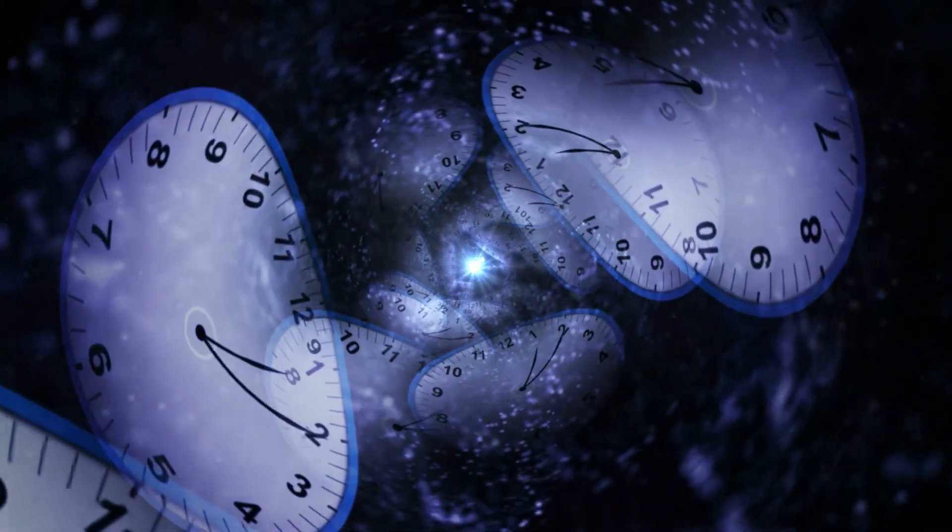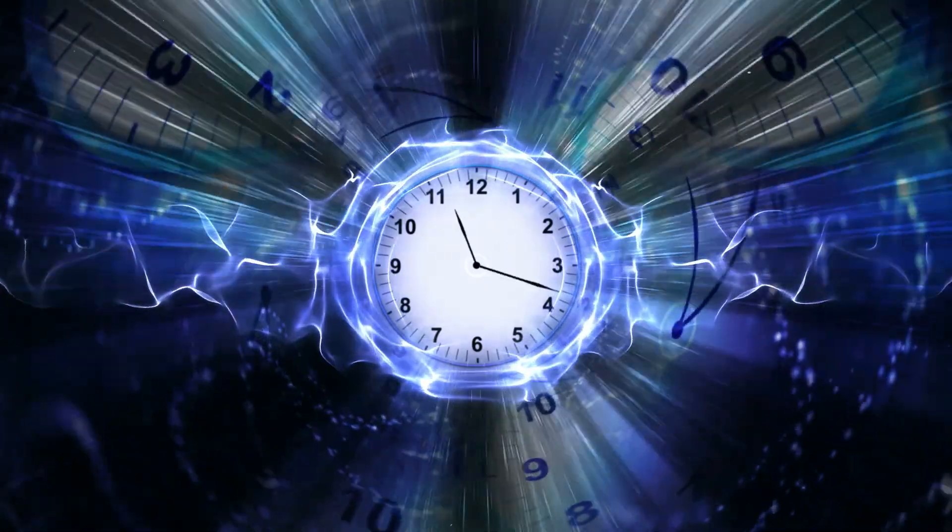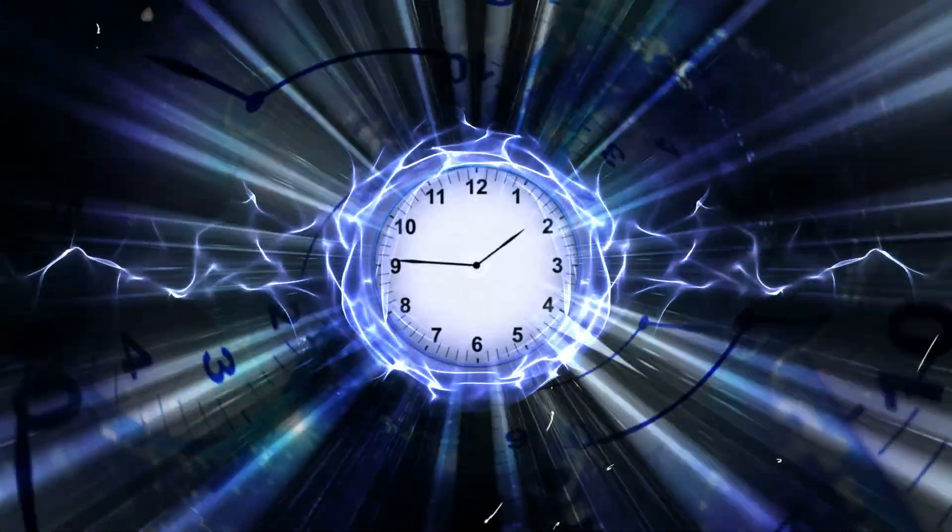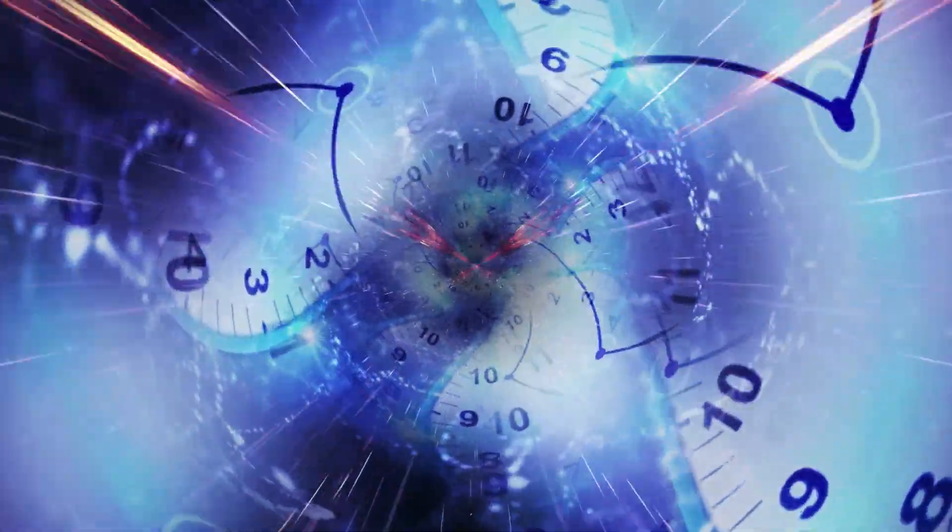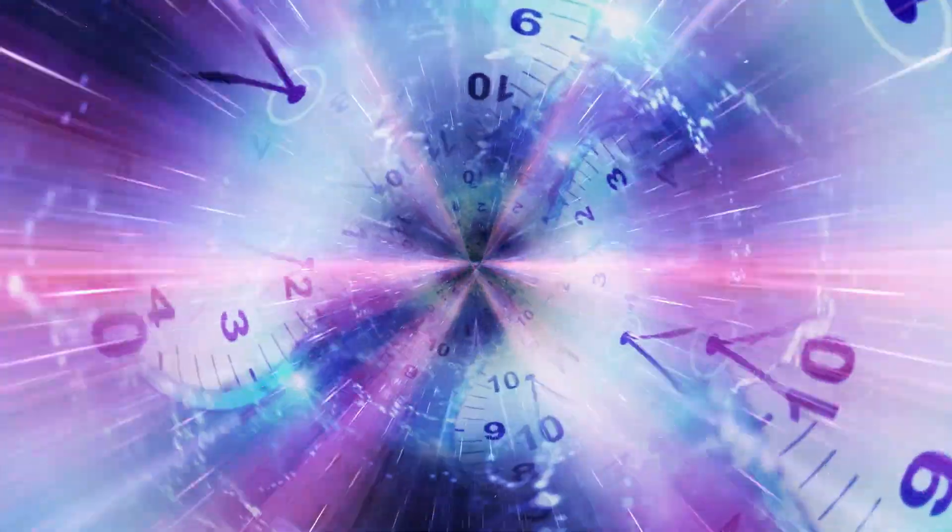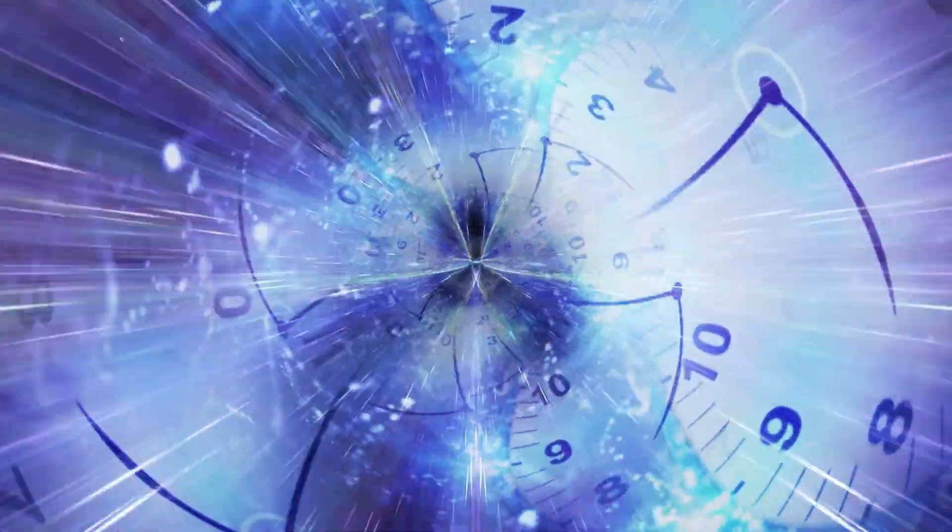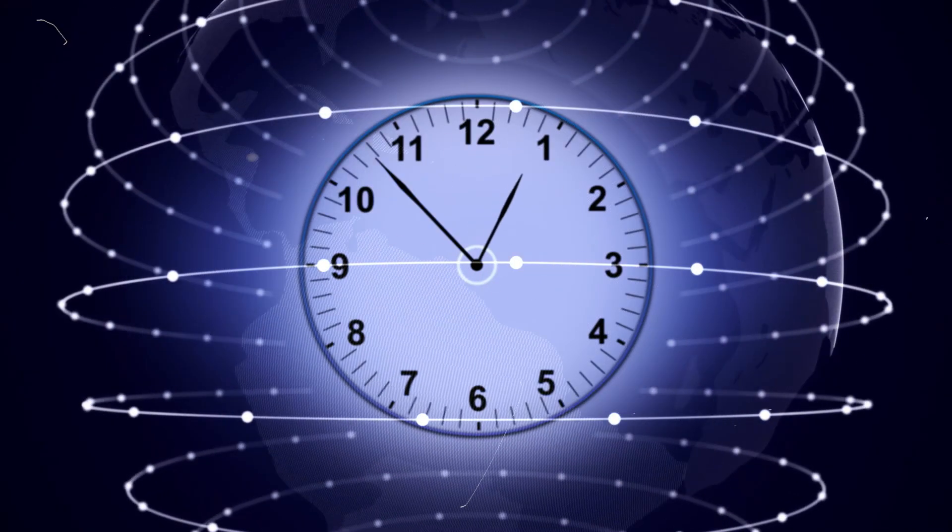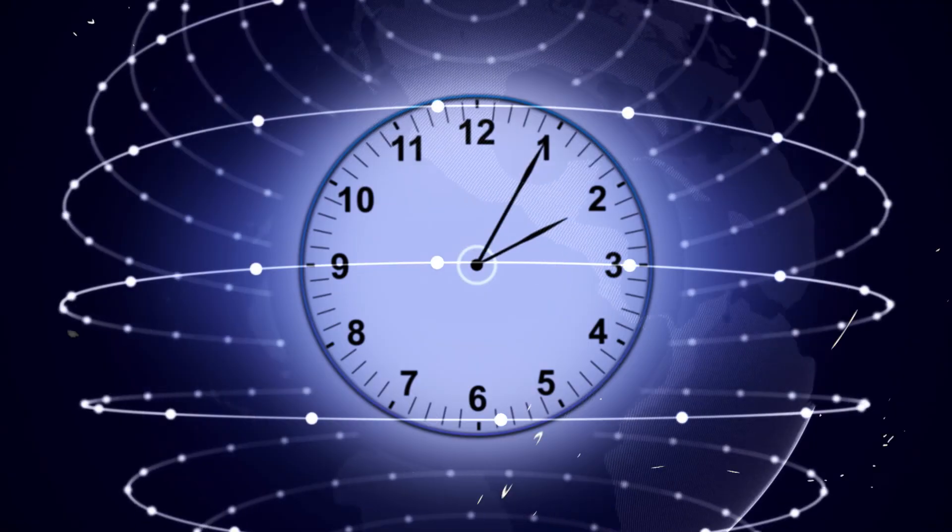Now let's shift our focus to atomic clocks and their exceptional precision. Atomic clocks use the resonance frequencies of atoms as their resonator. This happens when atoms absorb or emit microwave electromagnetic radiation during a quantum transition, resulting in an energy change.